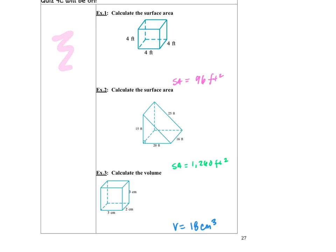Okay, there you go. So you can see that for this first one, your surface area is going to be 96 feet squared. Make sure you have the right units. Your second one, the surface area will be 1,260 feet squared. And the volume of this prism would be 18 centimeters cubed. Make sure you have the right units and the right exponent.